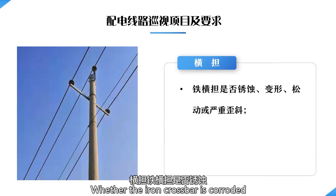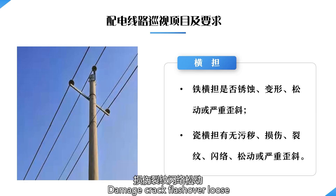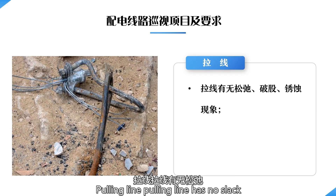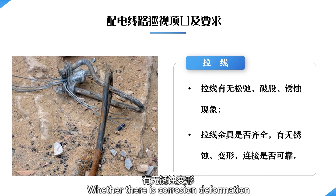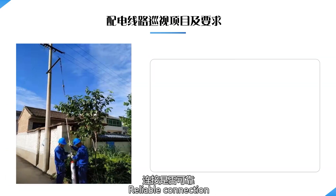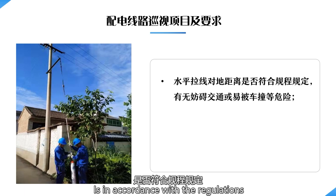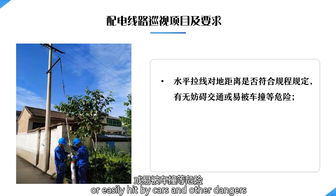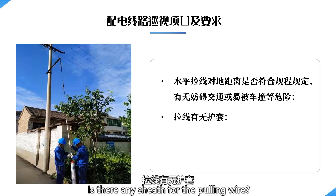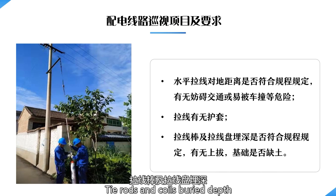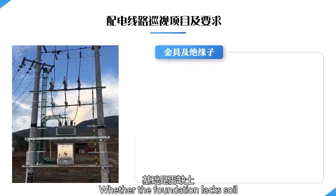Check whether the iron crossbar is corroded, deformed, or has loose screws. Check porcelain cross arms for dirt, damage, cracks, flashover, or loose or seriously screwed fittings. For pulling lines: check for slack, broken strands, or rust; whether pulling wire fittings are complete with no corrosion or deformation and have reliable connection; whether the horizontal cable-to-ground distance complies with regulations; whether there is any obstruction to traffic or danger of being hit by a car; whether there are seals for the pulling wire; and whether tie rods and coils comply with regulations with no uplift and no lack of soil in the foundation.